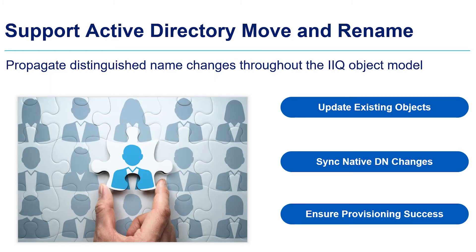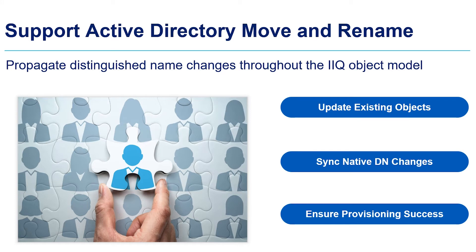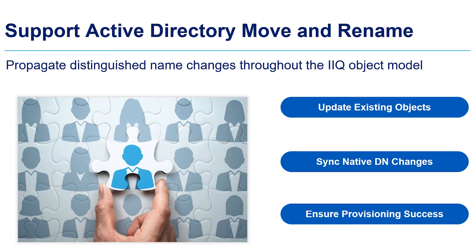We will also better support Active Directory move and rename operations. This will propagate DN (distinguished name) changes through the IdentityIQ object model. IdentityIQ uses the distinguished name in many places to tie to AD accounts and groups. When an account or group is moved or a name is changed in Active Directory, the DN will change. We continue to recommend using the DN as the unique identifier for all of your AD applications. This release will update existing objects based upon native changes by using the GUID — a unique identifier — to identify that the DN has changed and then correctly modifying the object. By synchronizing these native changes, there will be no need to do any manual updates for these associated objects. We will ensure provisioning success by detecting DN changes, so that during an access request that happened prior to the DN change, the provisioning stage can identify the change and seamlessly use the new DN.